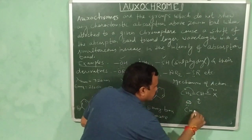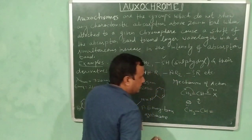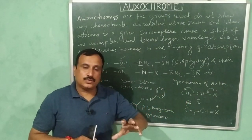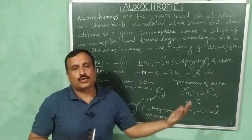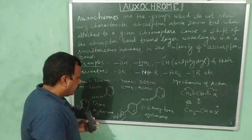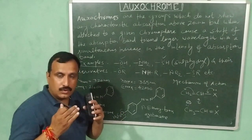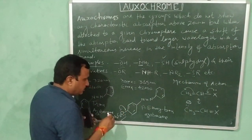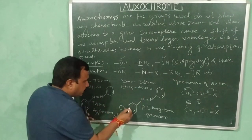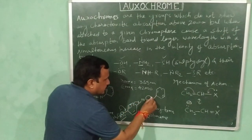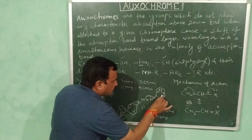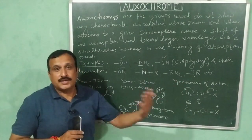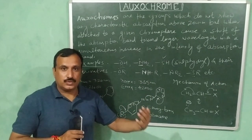The C=C bond becomes single, the adjacent bond acquires double bond character, and a positive charge appears on the oxochrome. In this way, the non-bonding electrons enter into conjugation with the chromophore and extend it. Similarly, the non-bonding electrons on the oxygen atom of the ethoxy group extend conjugation — these two electrons move into the basic chromophore while the pi electrons shift accordingly. So this oxochrome extends conjugation by supplying its non-bonding electrons towards the basic chromophore.